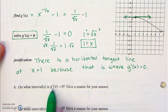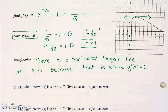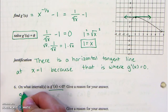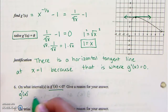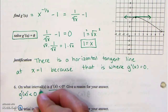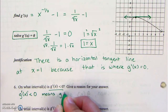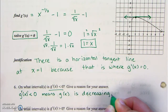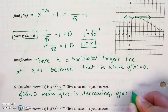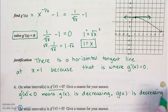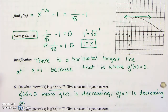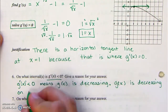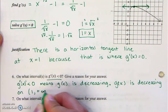On what intervals is g prime less than 0? Give a reason for your answer. g prime of x less than 0 means g is decreasing. g is decreasing on the interval from 1 to infinity.